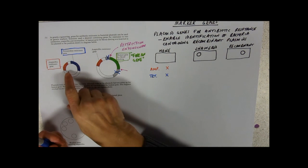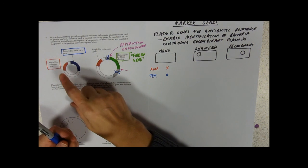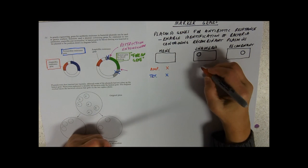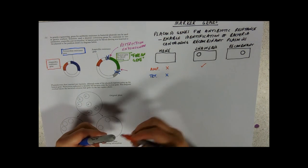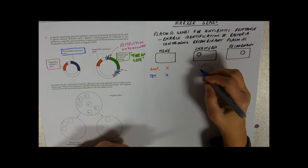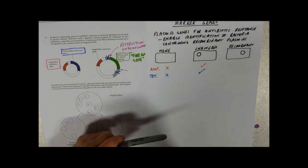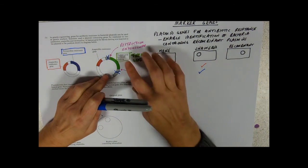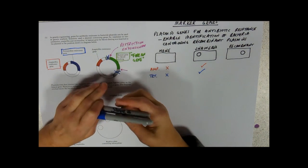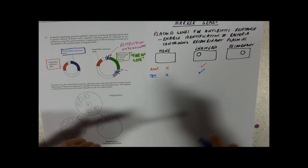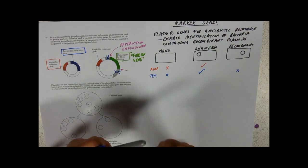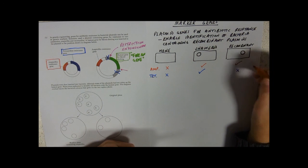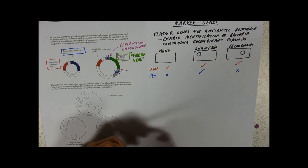However, our unaltered bacteria, the ones that have taken up unaltered plasmids, are resistant. They still have their ampicillin. They survive on ampicillin and they survive on tetracycline. Whereas, the ones that are recombinant, we've disrupted that tetracycline gene. They die on tetracycline. But they've still got their ampicillin-resistant gene. So they survive on ampicillin.